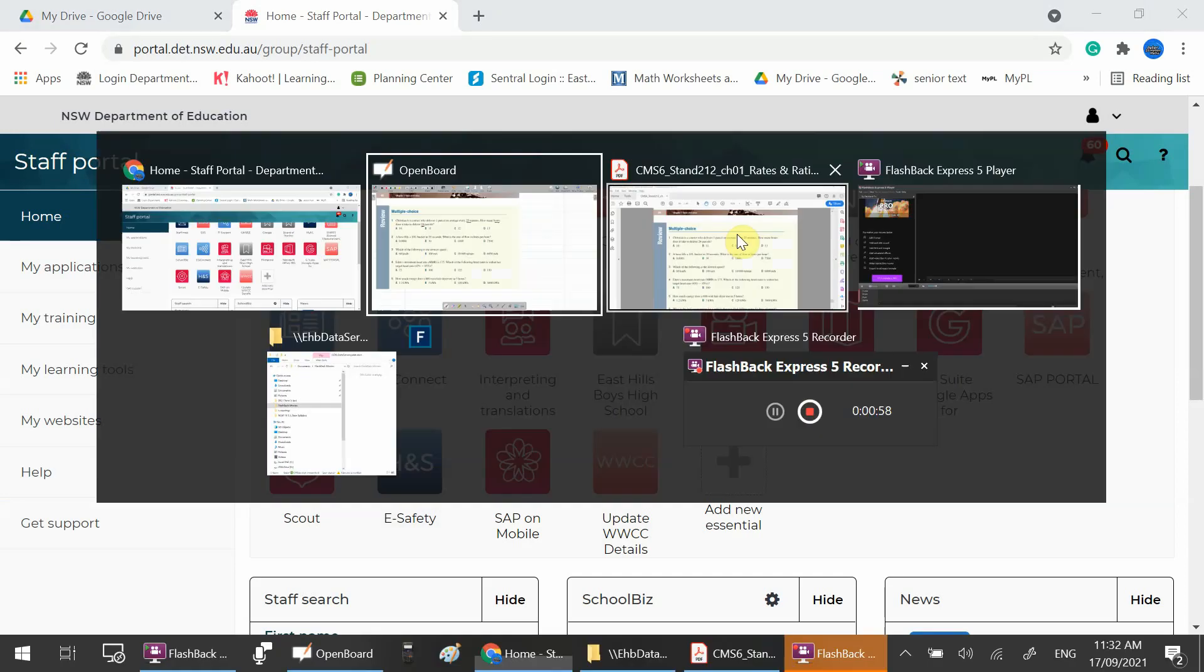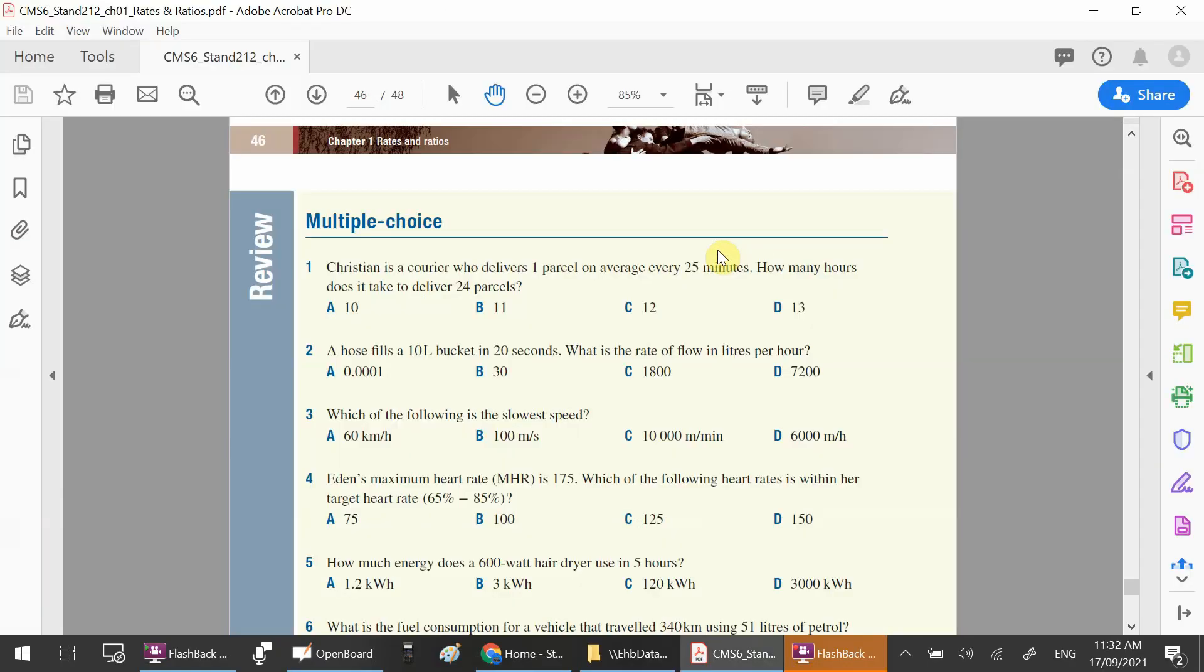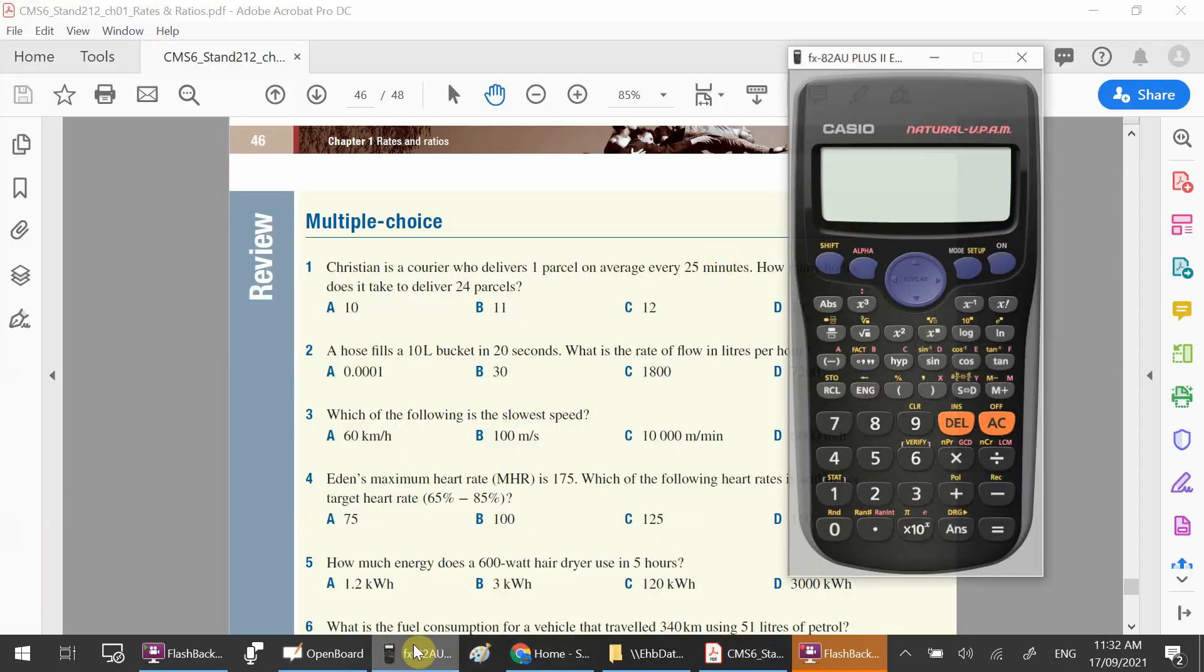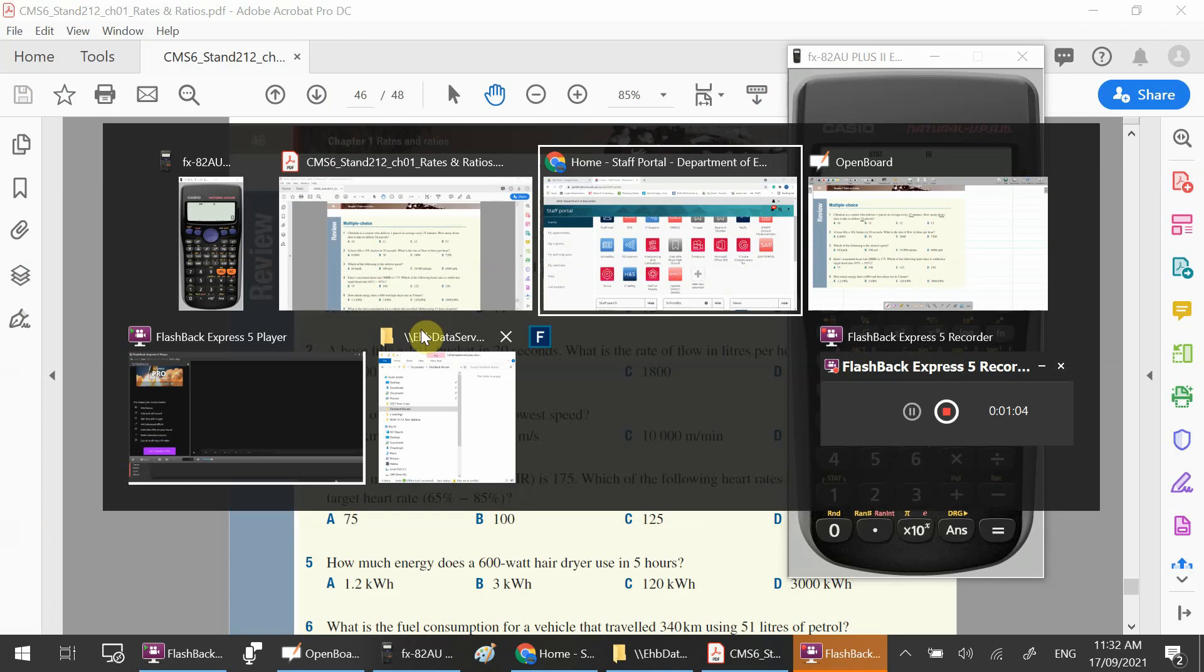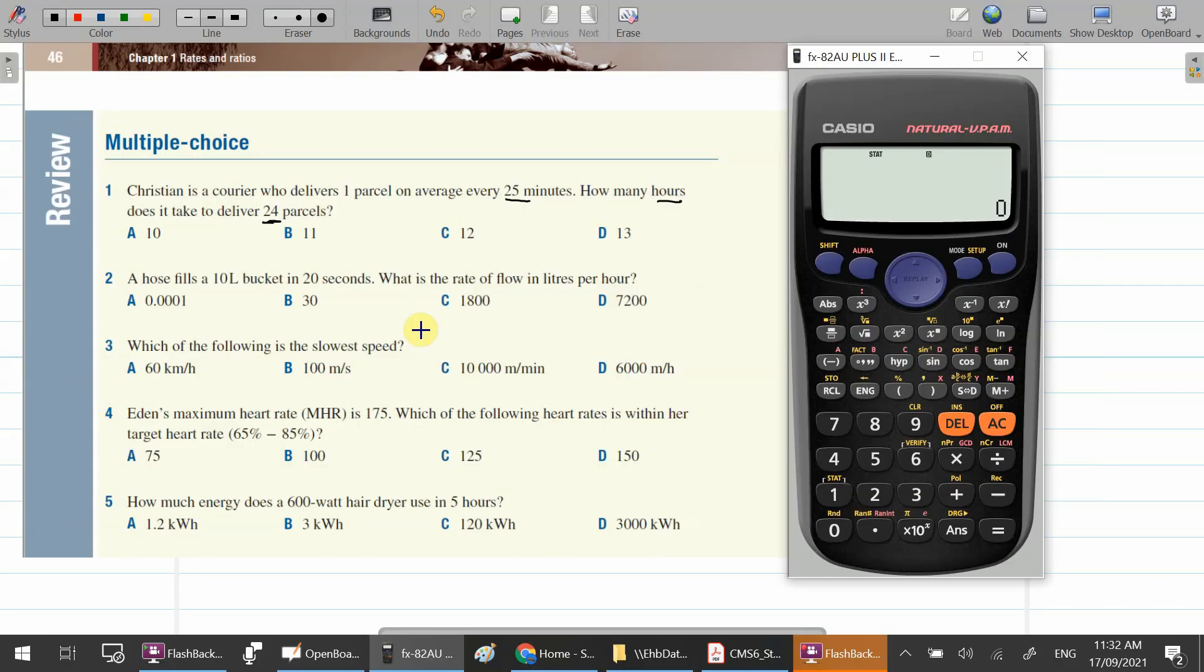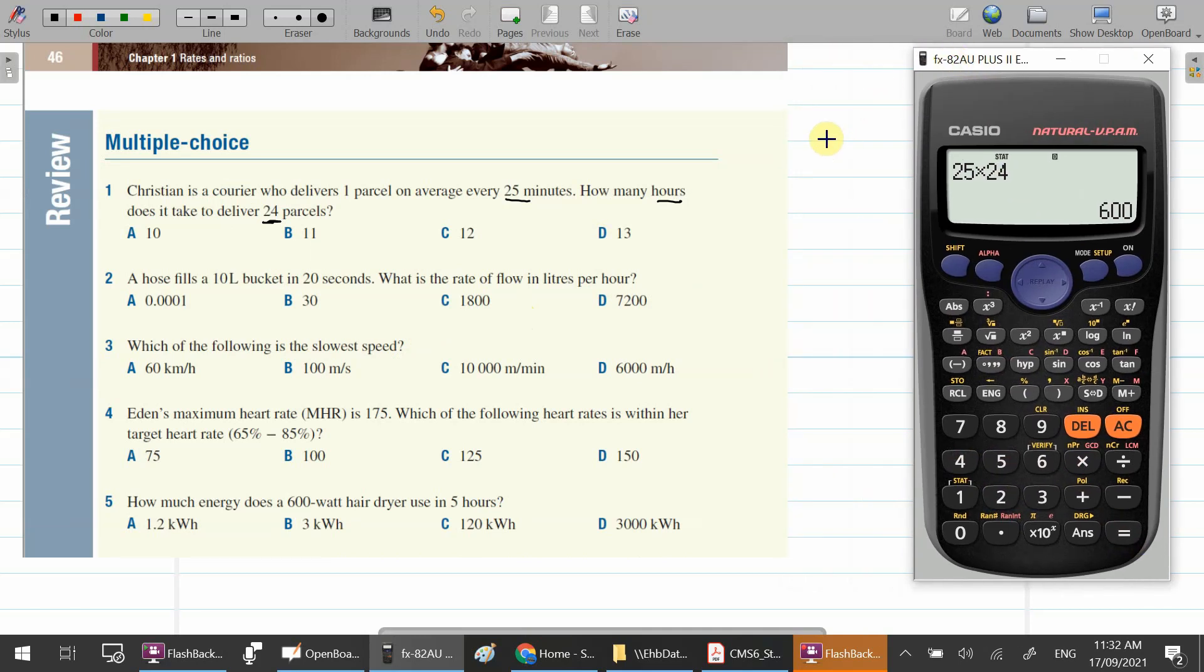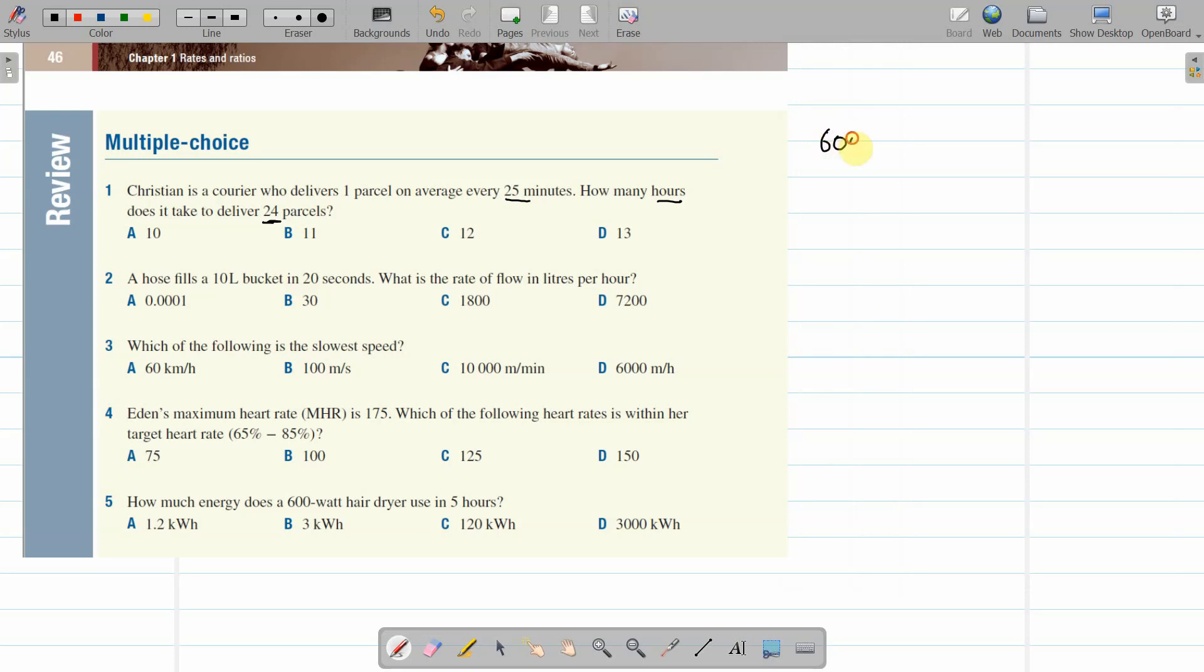Let's find the calculator. There we go. Bring back the calculator. So 25 for 1 times 24 is 600 minutes for 24 parcels.